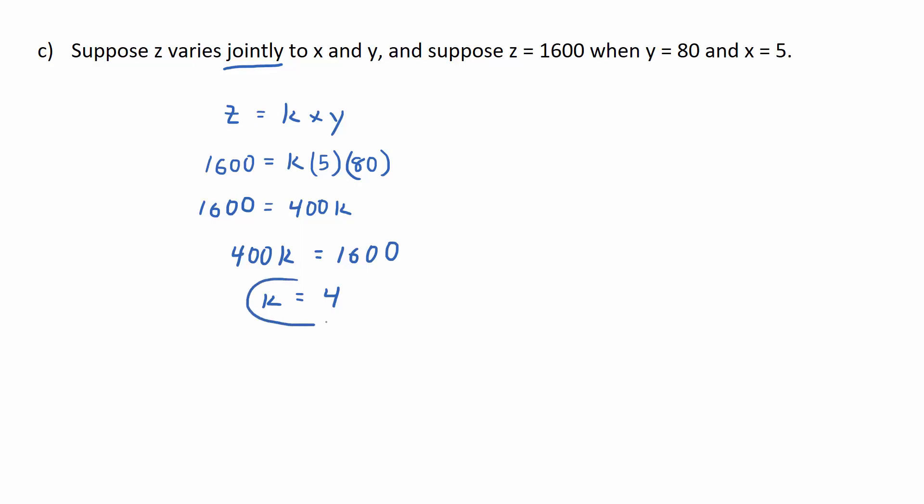So that's the constant of variation. And then if you want to go further and find the equation of variation, you just fill in the 4 right there, wouldn't you? And get z is equal to 4 times x times y.